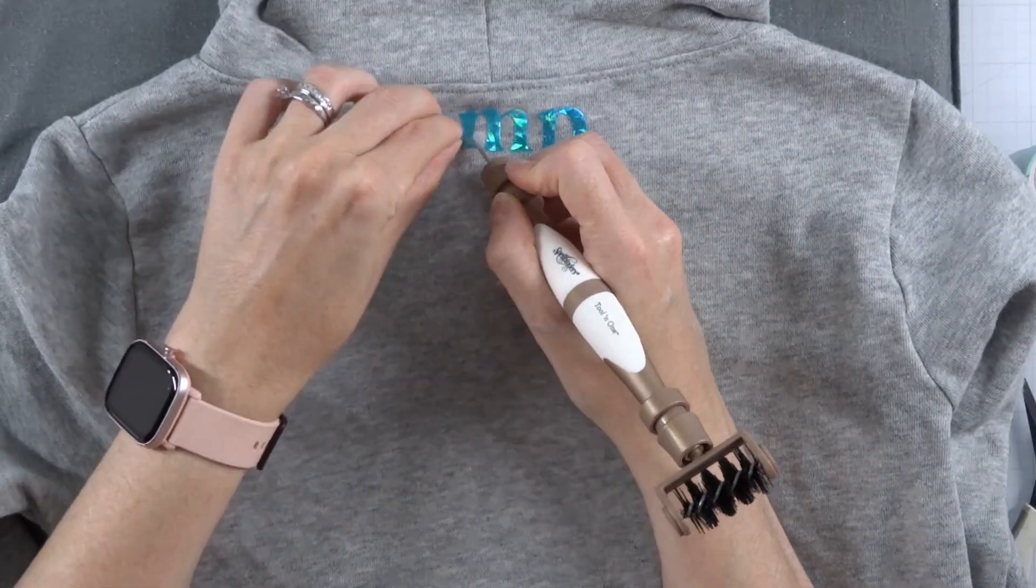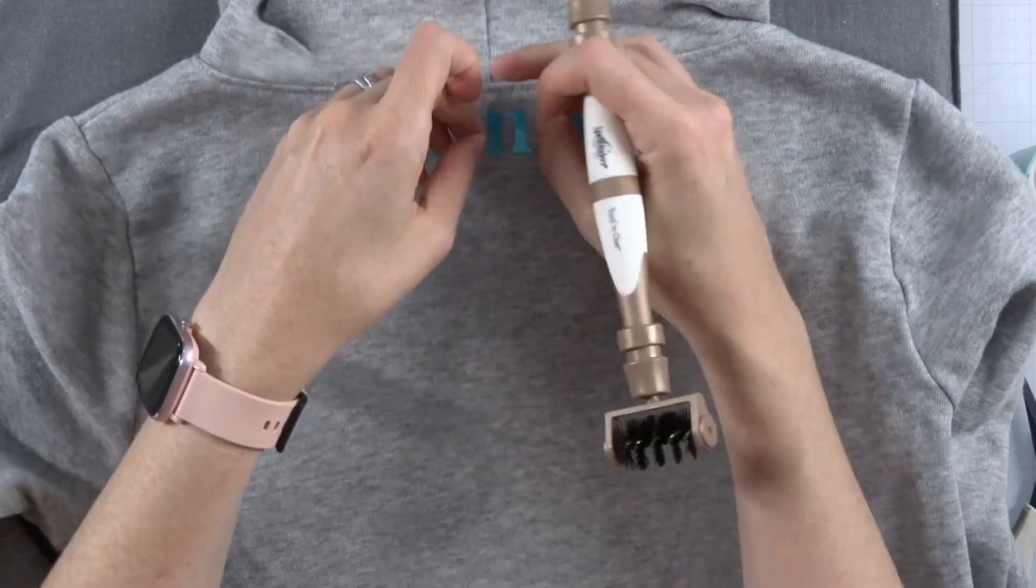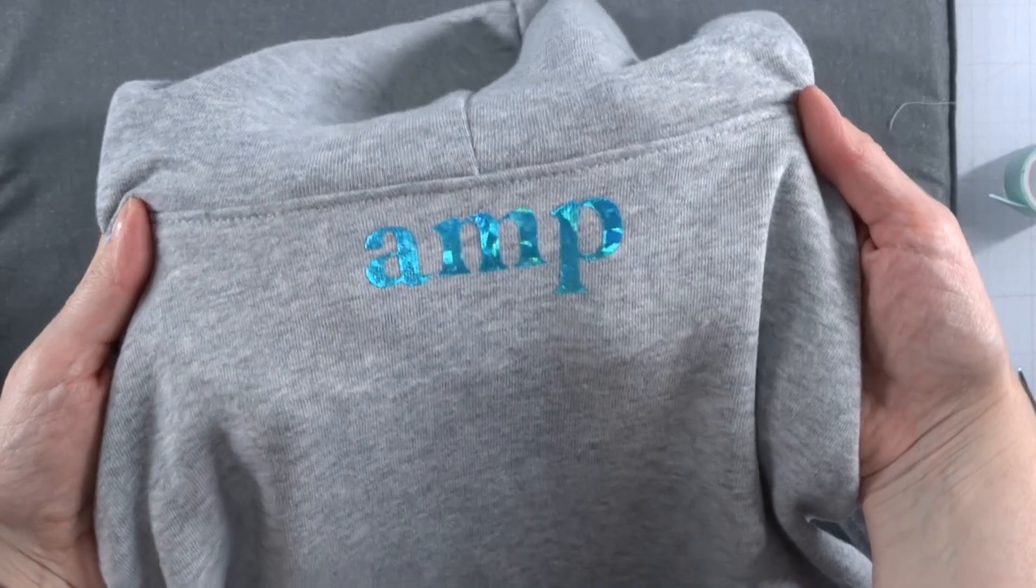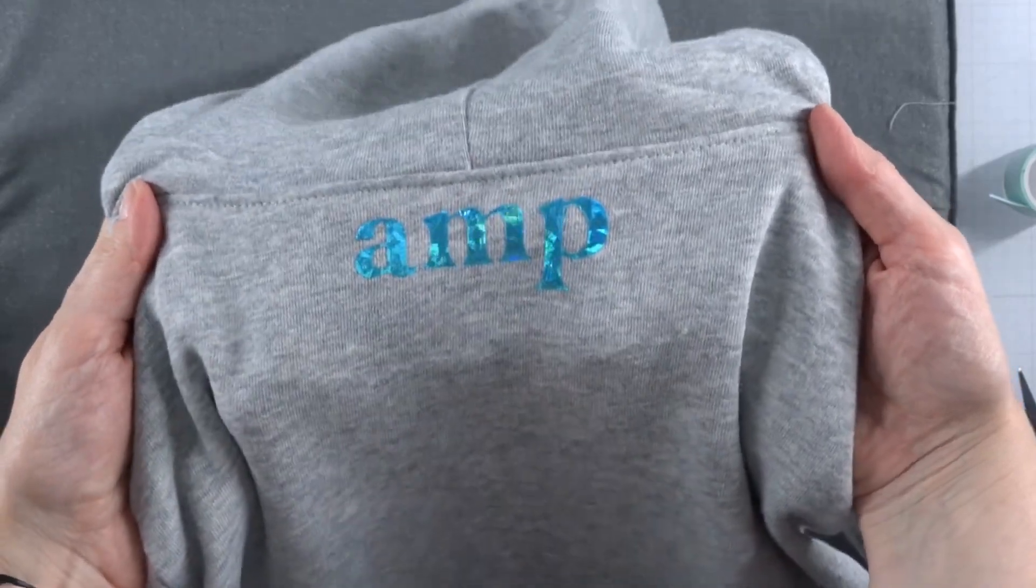I'm using my picker tool to pull off that clear piece, which is the part that we would be able to remove in one fell swoop if we were using a larger piece.